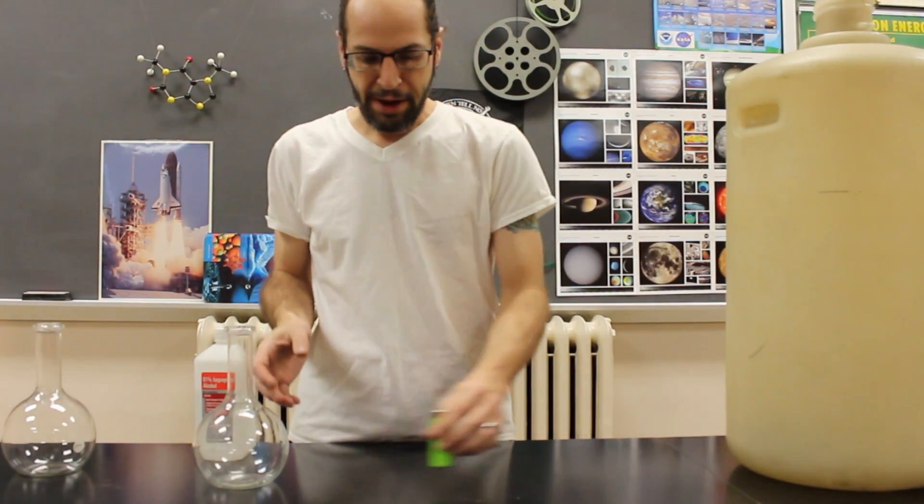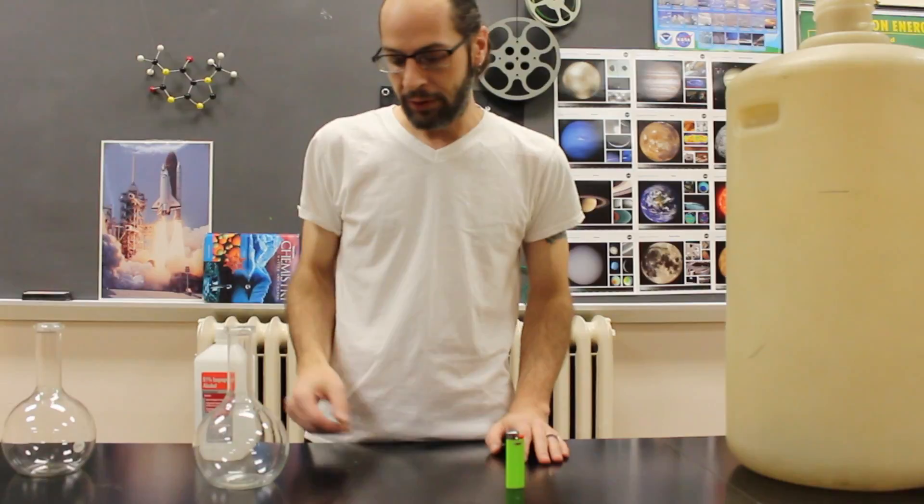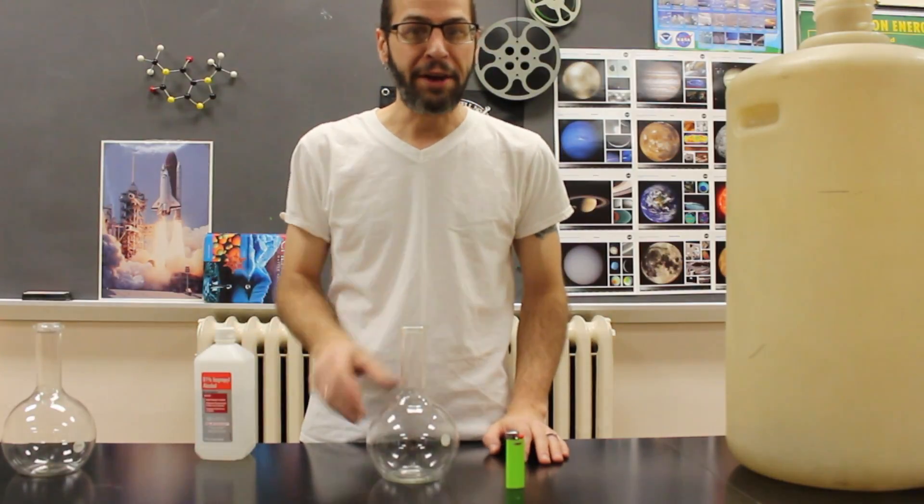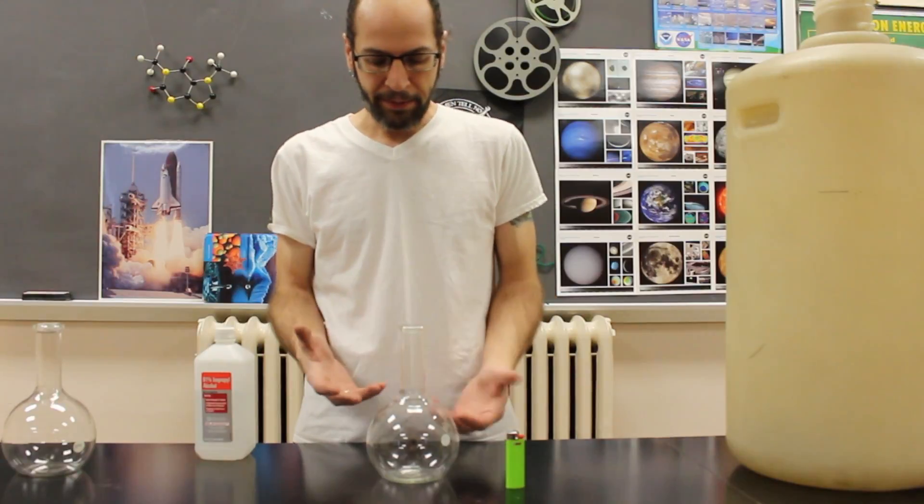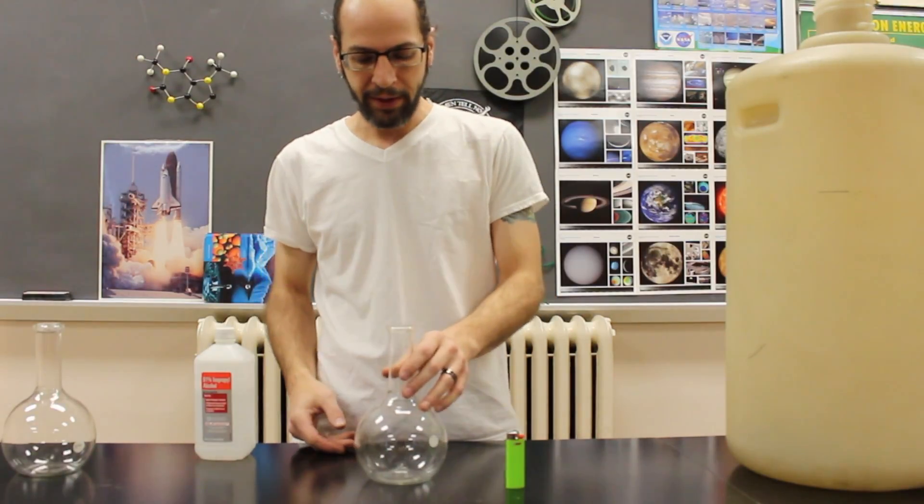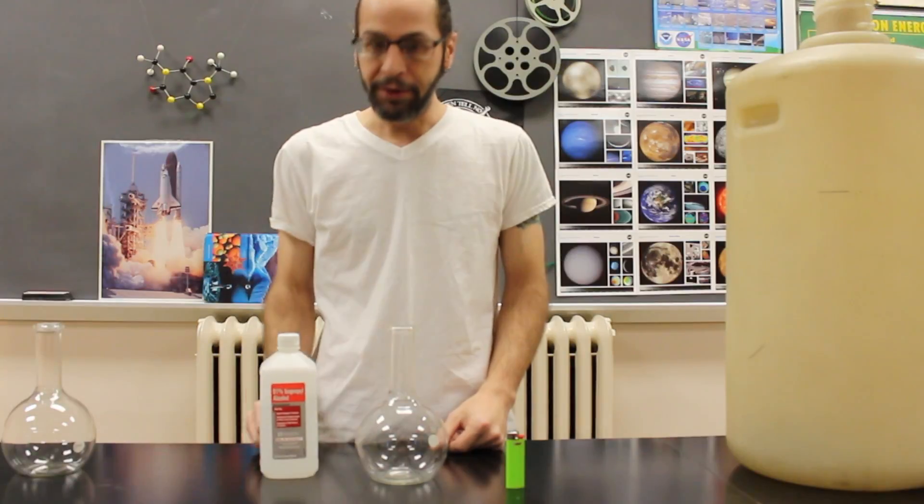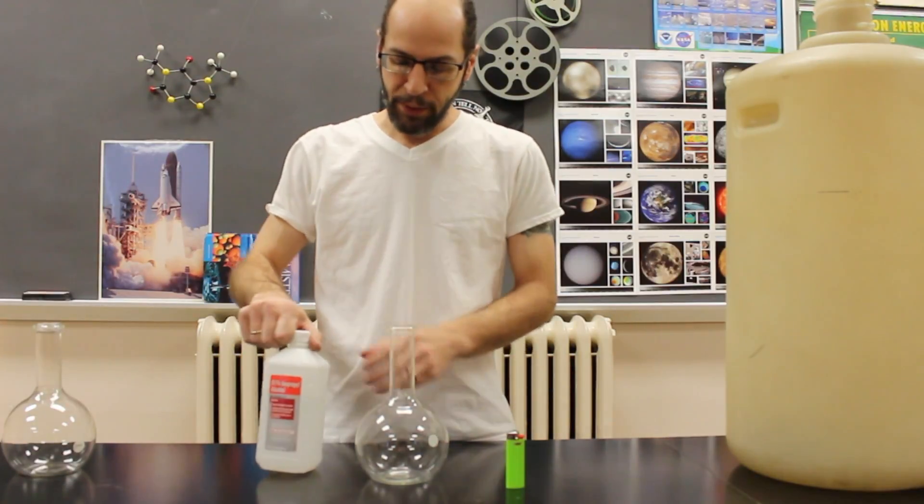All right, so let me show you basically the setup here. I'm going to need something to get our fire started. We need some kind of a container. In this case, I'm going to use just a simple round bottom flask, a flat bottom flask. We're going to use that, and of course we need some alcohol.